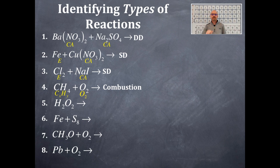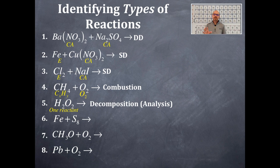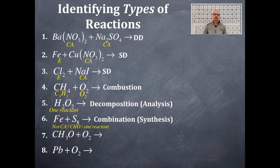Number five: you only have one reactant, so there's only one possibility — that is going to be a decomposition or an analysis type of reaction. Number six is a little bit difficult. You ask yourself: is there a California? No. Are there carbons, hydrogens, and oxygens? No. Is there one reactant? No. Because there's no California, it cannot be a single displacement or a double displacement. Without carbons, hydrogens, and oxygens, it cannot be a combustion. And since there's not one reactant, it can't be a decomposition. You're only left with one type of reaction: a combination or synthesis reaction.